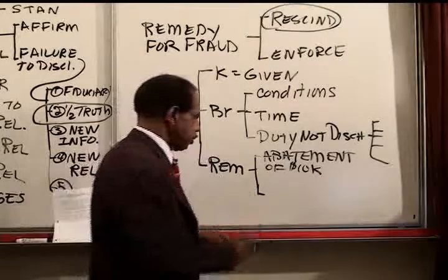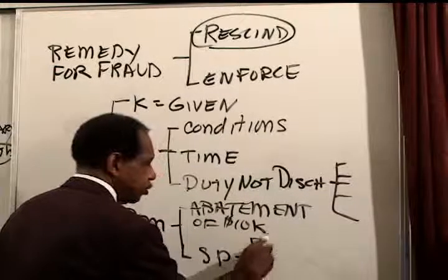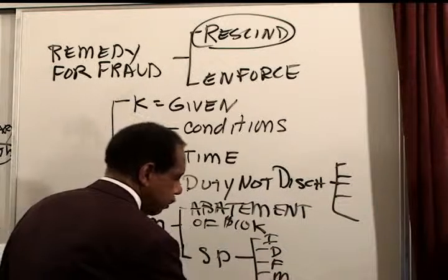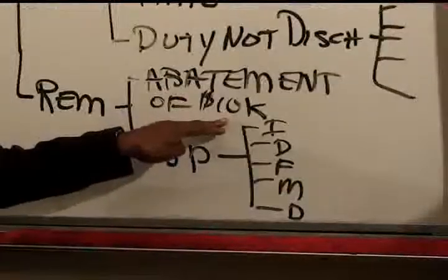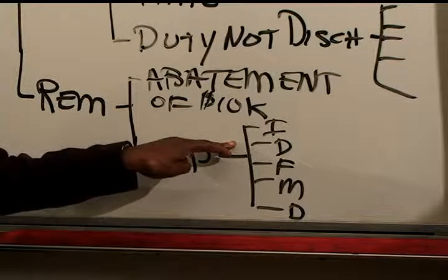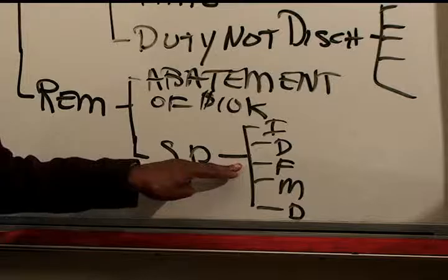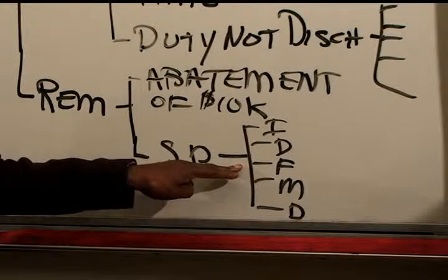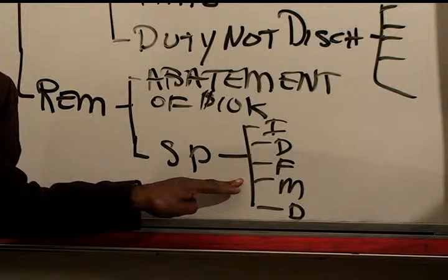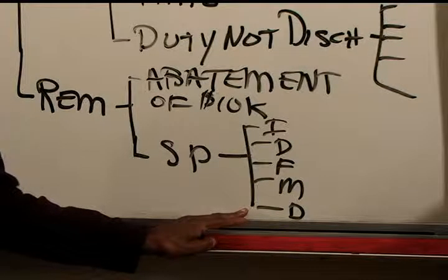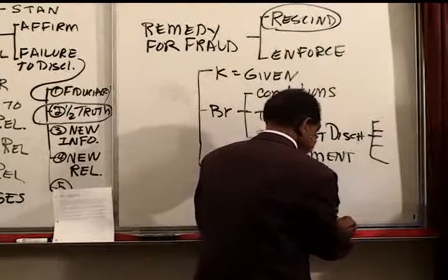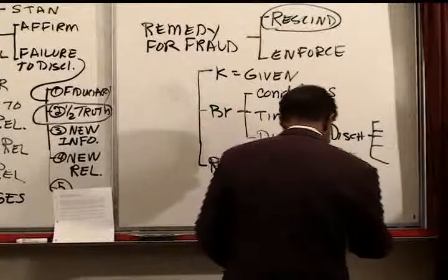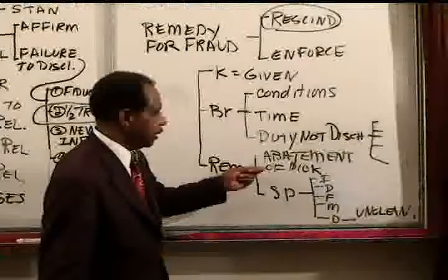Barb wants specific performance. For specific performance: the remedy at law is inadequate because land is unique. Contract terms are definite. It's feasible to enforce — the court can make Stan convey the title or convey it itself. Mutuality — the court will make Barb pay for it. But there's a serious problem: Barb has unclean hands. Even if you don't find fraud, she has unclean hands, and that's a defense to her suit for specific performance. She might get damages, but not specific performance.